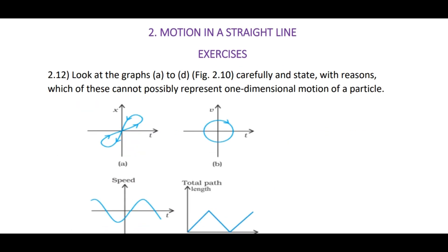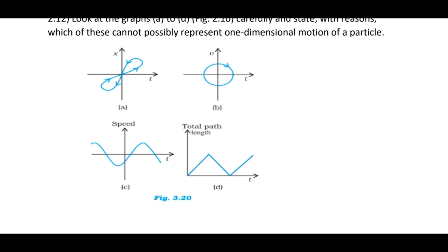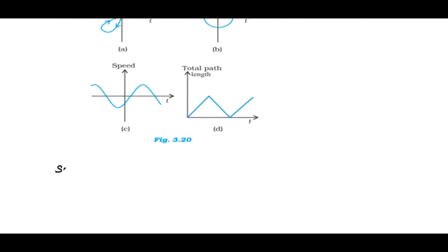Coming to 2.12, look at the graphs A to D, figure 2.10, carefully and state with reasons which of these cannot possibly represent one-dimensional motion of the particle. Coming to the solution here, all the four graphs are impossible.